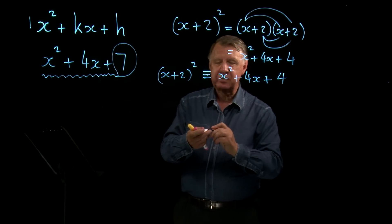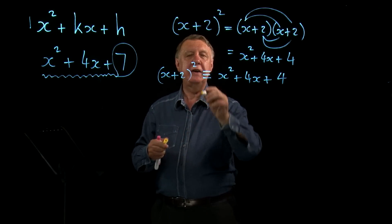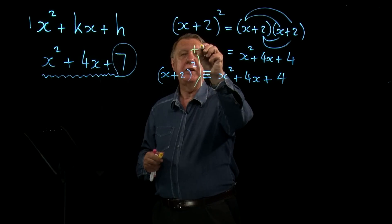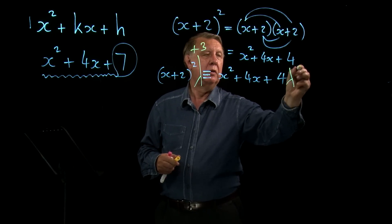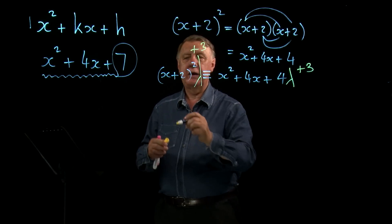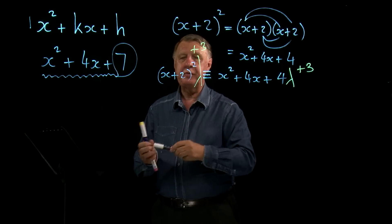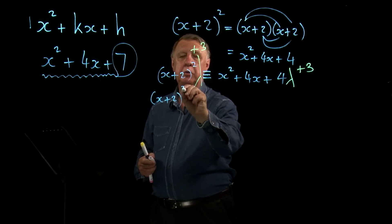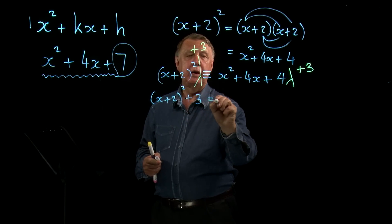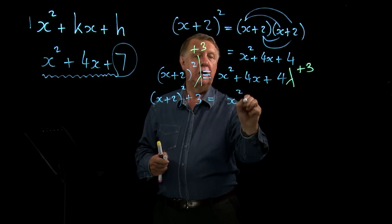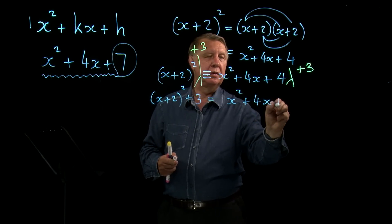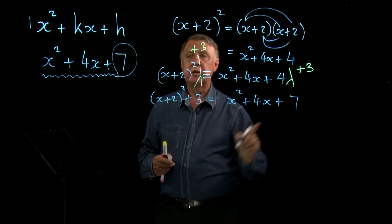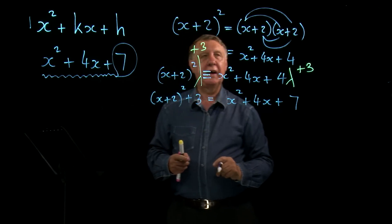If I now add to each side 3, then I will get on the left x plus 2 squared plus 3. And on the right, I get the 7, which of course is what I actually want.